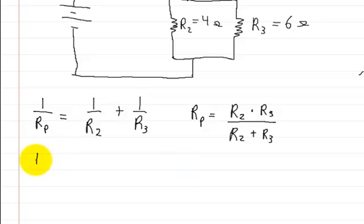So 1 over Rp, which is the resistance in parallel, is equal to 1 over R2. R2 is 4 ohms, so this is 1 over 4 ohms plus 1 over 6 ohms.